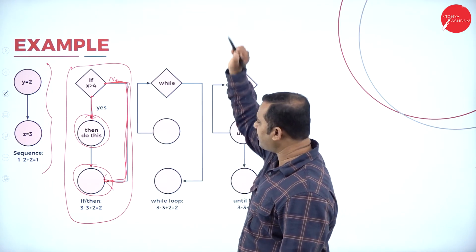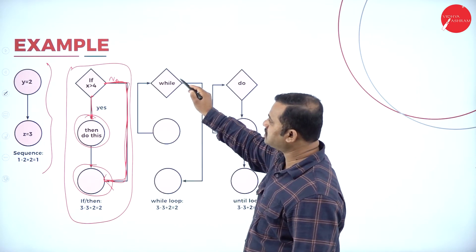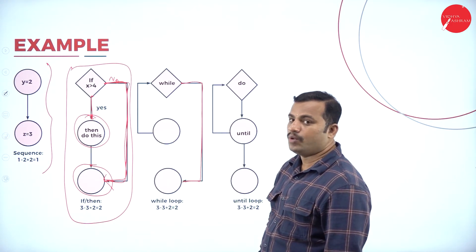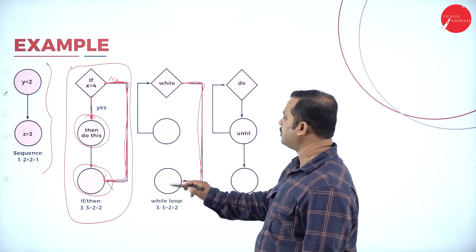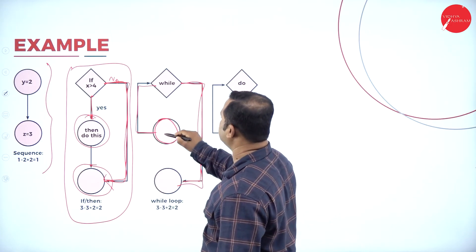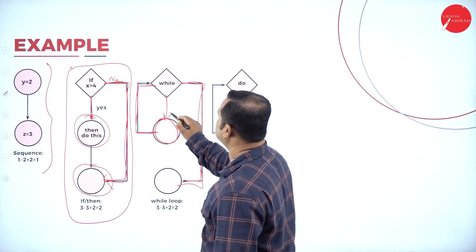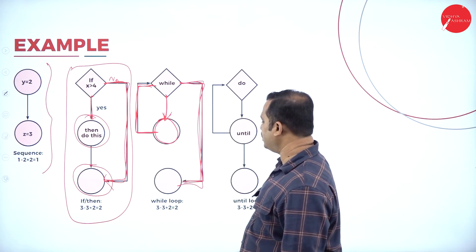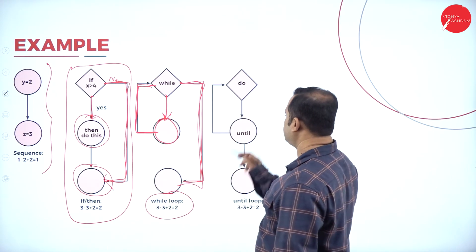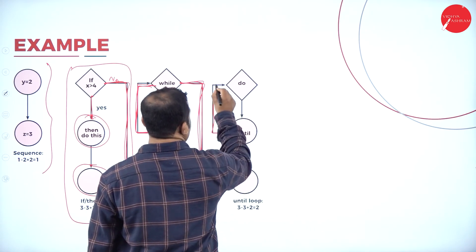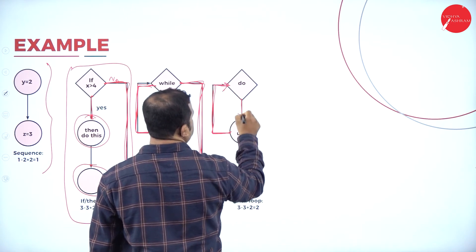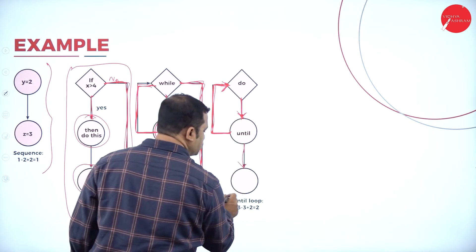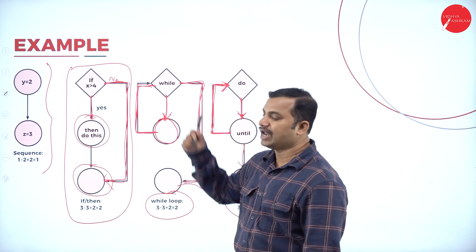Similarly, for a while loop, when the condition is satisfied, we keep executing the loop; when the condition is not satisfied, control comes out of the looping statement. The looping statement keeps executing the set of statements until the condition fails, then exits the while loop. Likewise, for a do-while loop, statements are repeatedly executed until the condition fails, then control comes out and executes the remaining statements. This is all represented in the form of a graphical representation.